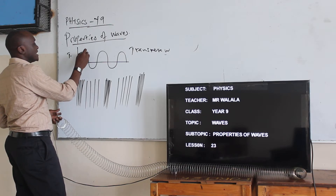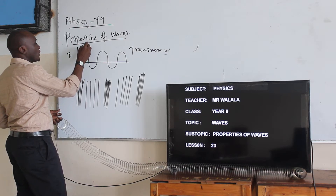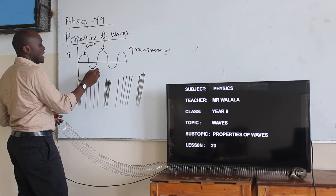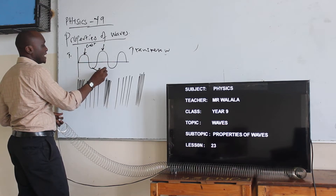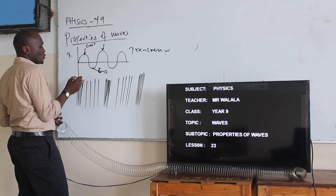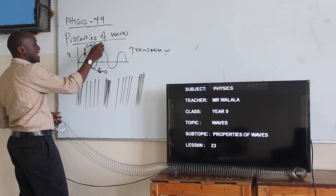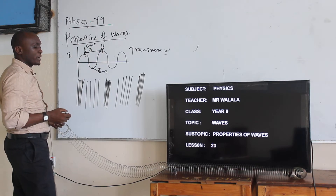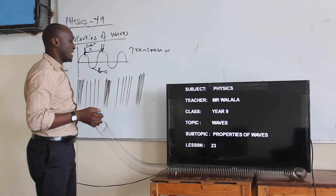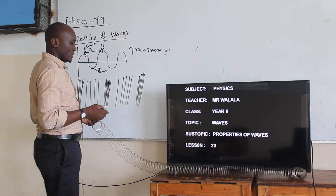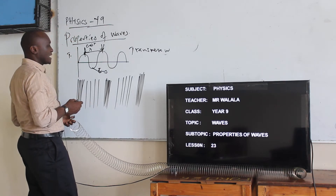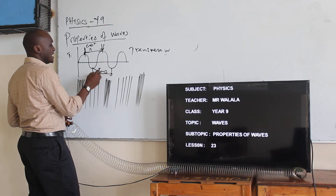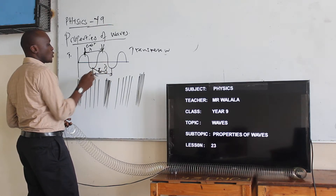This is a transverse wave. You can see that this part here we call the crest, and this down part here we call it the trough. We can actually determine the wavelength from there to there — the distance from one crest to another crest, or it could be one trough to another. This is what you call the wavelength.